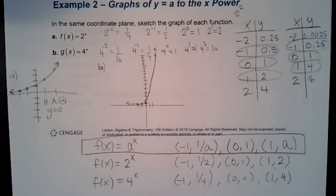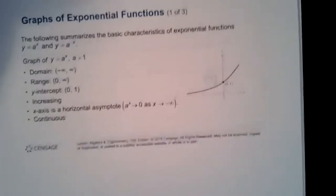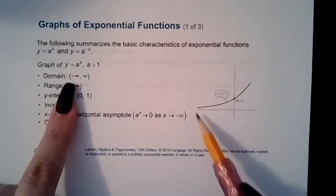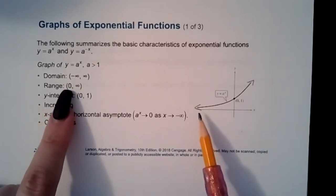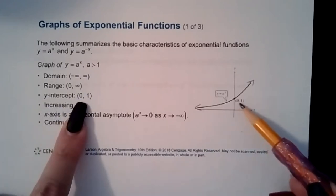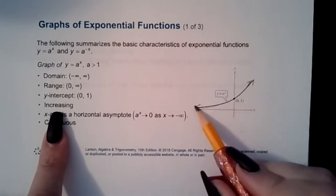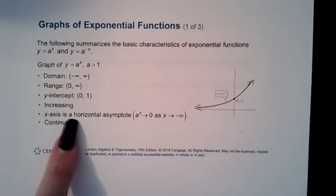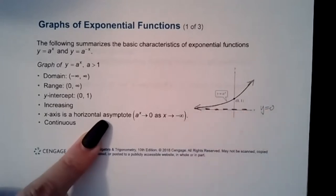General properties: the domain is all real numbers (negative and positive infinity). The range does not go below zero and never touches the x-axis, so it's (0, ∞). There is always a y-intercept at (0, 1). The function is increasing from left to right, and the x-axis (y = 0) is the horizontal asymptote.